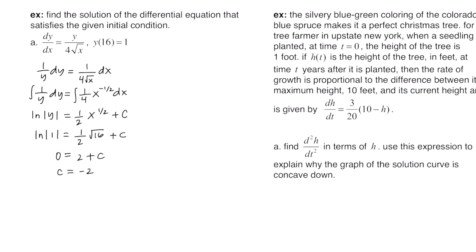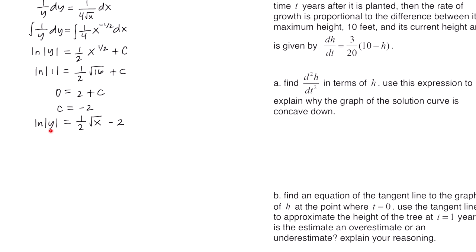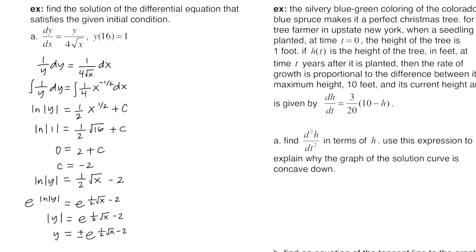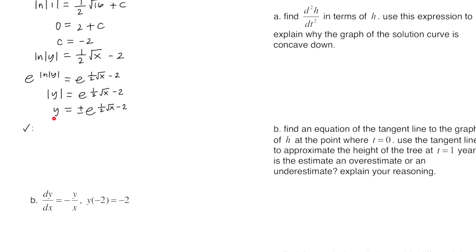With c = -2 plugged back in, we solve for y by exponentiating with base e. The e and ln undo each other, leaving |y|. We remove the absolute value by bringing in a ± on the right side. To determine whether to use + or -, we check the initial condition — the y value is positive — so we test the positive option. Plugging in y = 1 and x = 16: √16/2 - 2 = 2 - 2 = 0, and e⁰ = 1. It checks out.